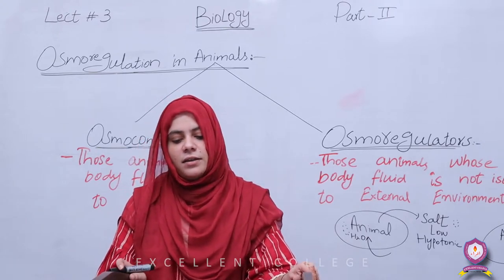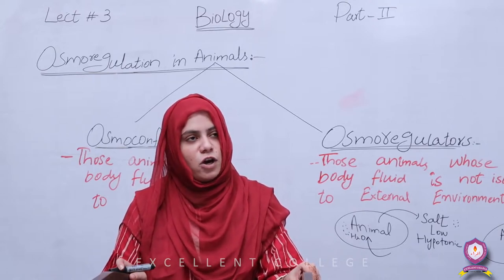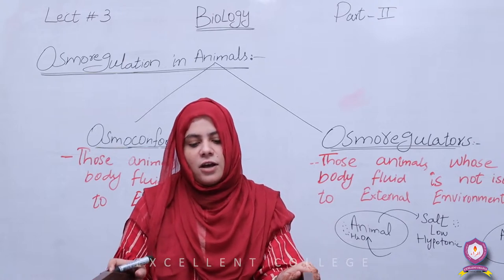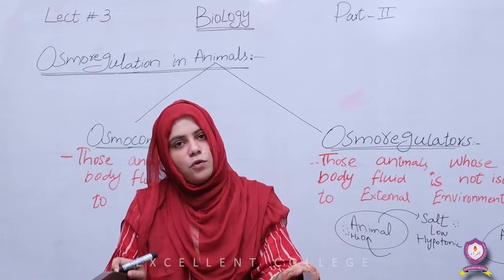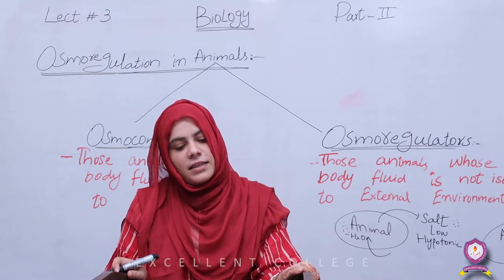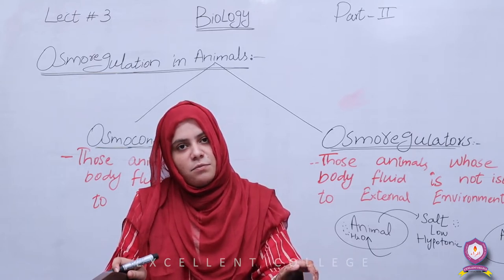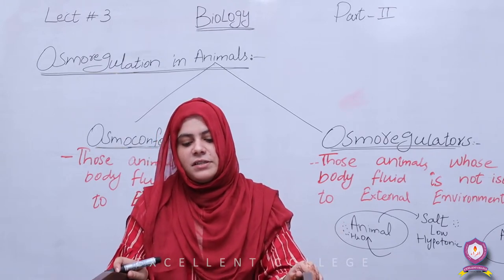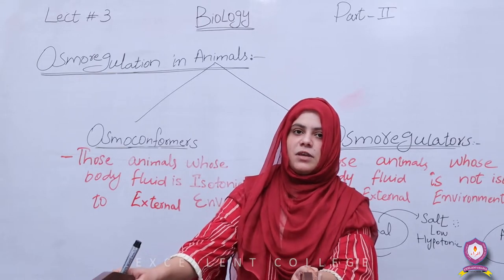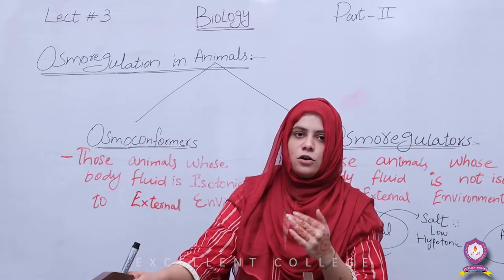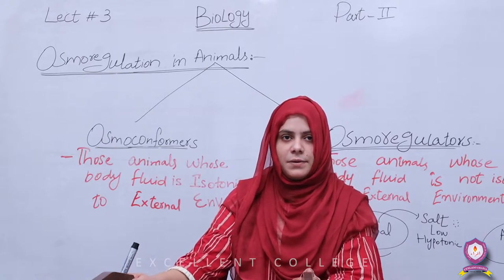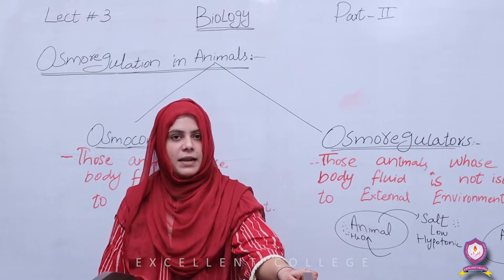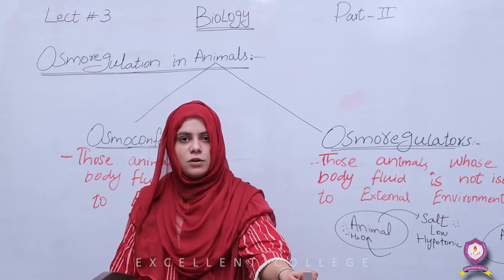अगर water और salt बहुत ज्यादा gain हो जाए, बहुत ज्यादा body के अंदर आ जाए, तो cell फट सकता है। लेकिन अगर बहुत कम हो तो cell में shrinkage हो जाती है। तो इस तरह से इन सारी चीज़ों को देखके, animals में इनको balance करना है। Cell के अंदर जरूरत के मुताबिक पानी दाखल भी होता है और जरूरत के मुताबिक पानी body से निकलता भी है। इसमें दो main approaches जो maintain और balance करती हैं water और salt को।